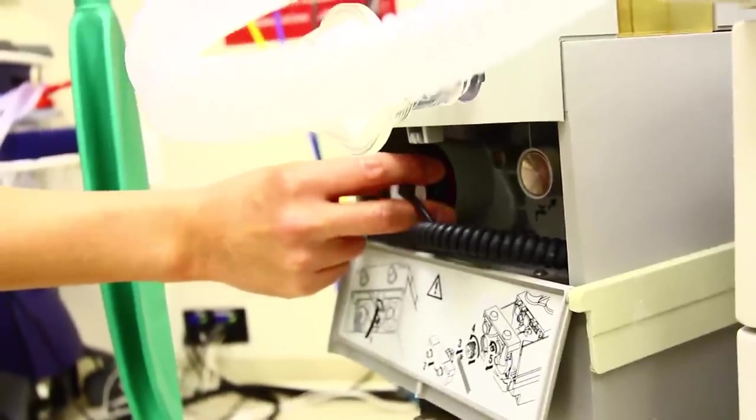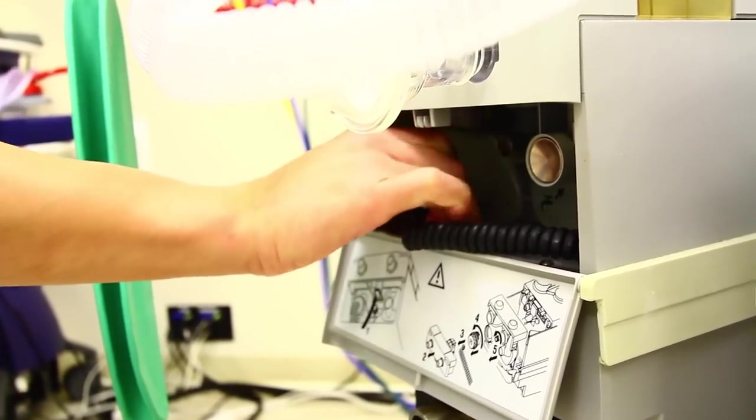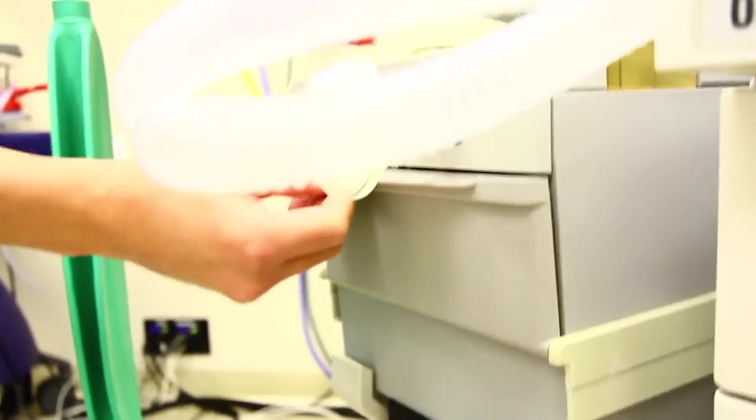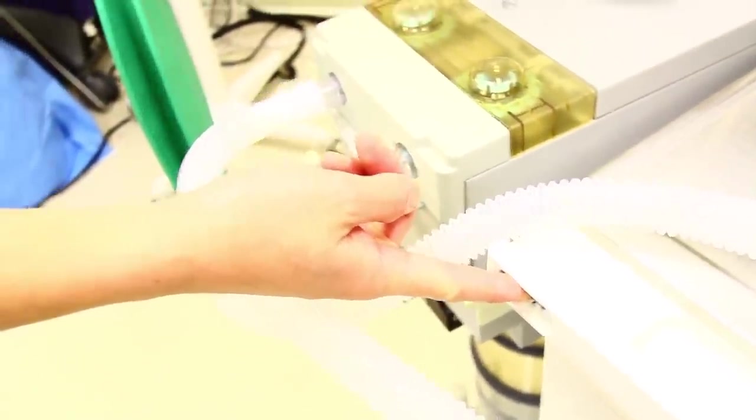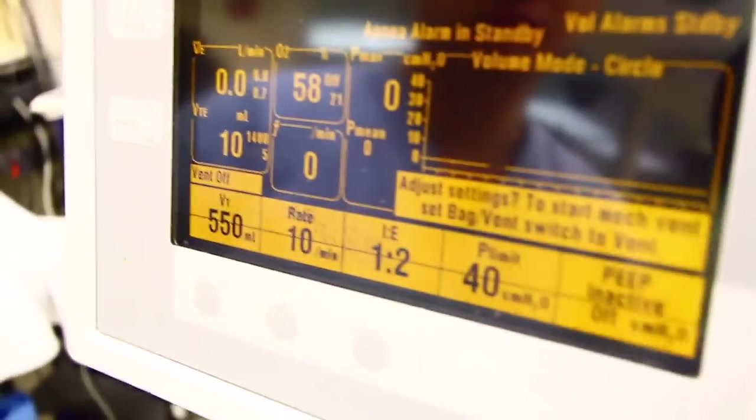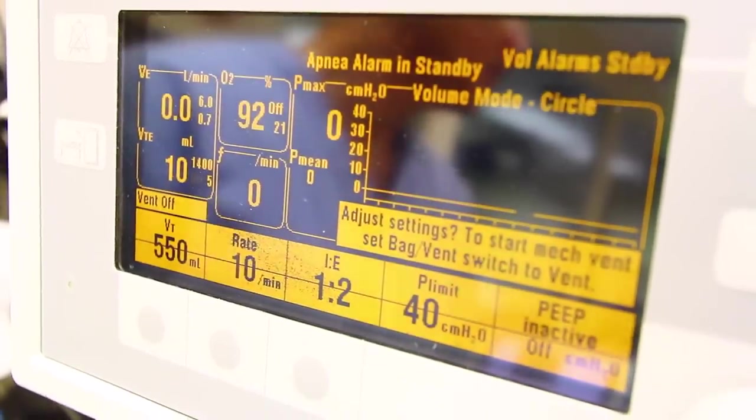It will say reinstall sensor after CAL complete. Now you want to reinstall the oxygen sensor. Insert it and turn it clockwise. Then close the door. Activate the oxygen flush valve and verify that the oxygen level goes above 90%.